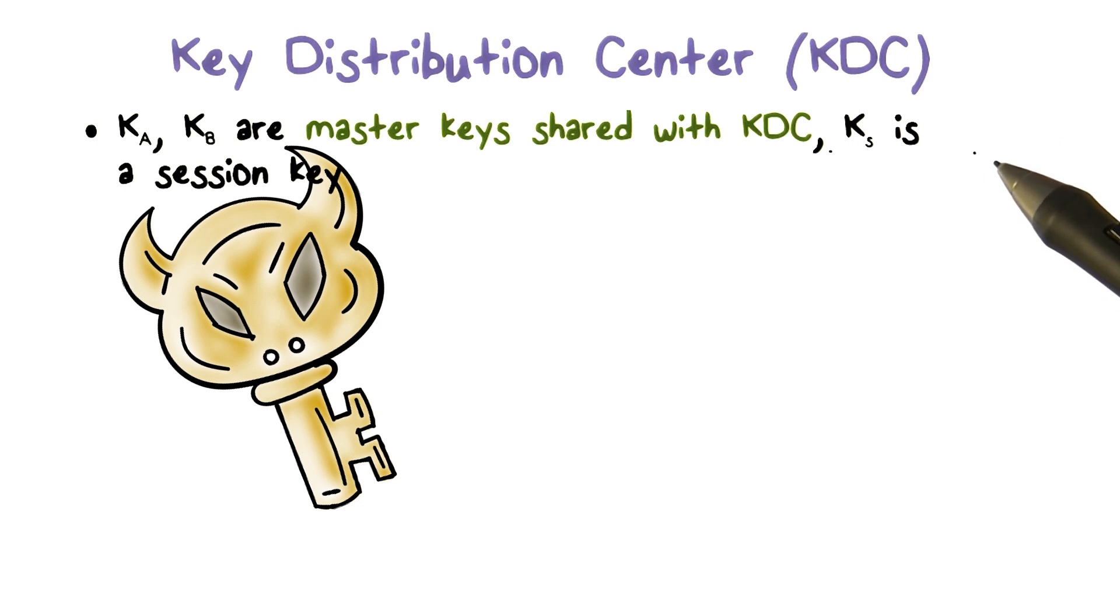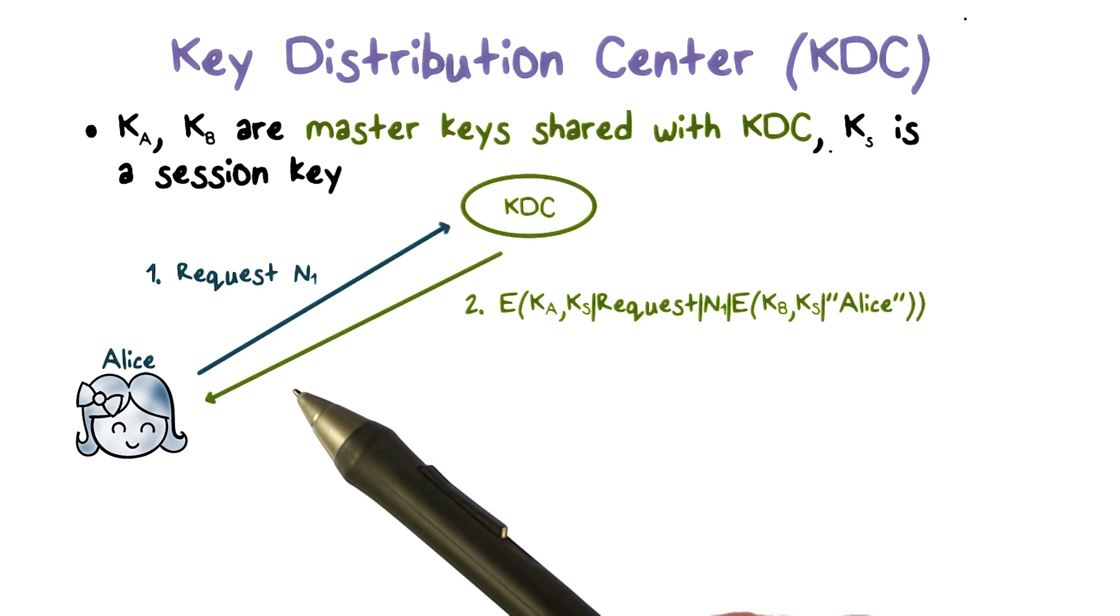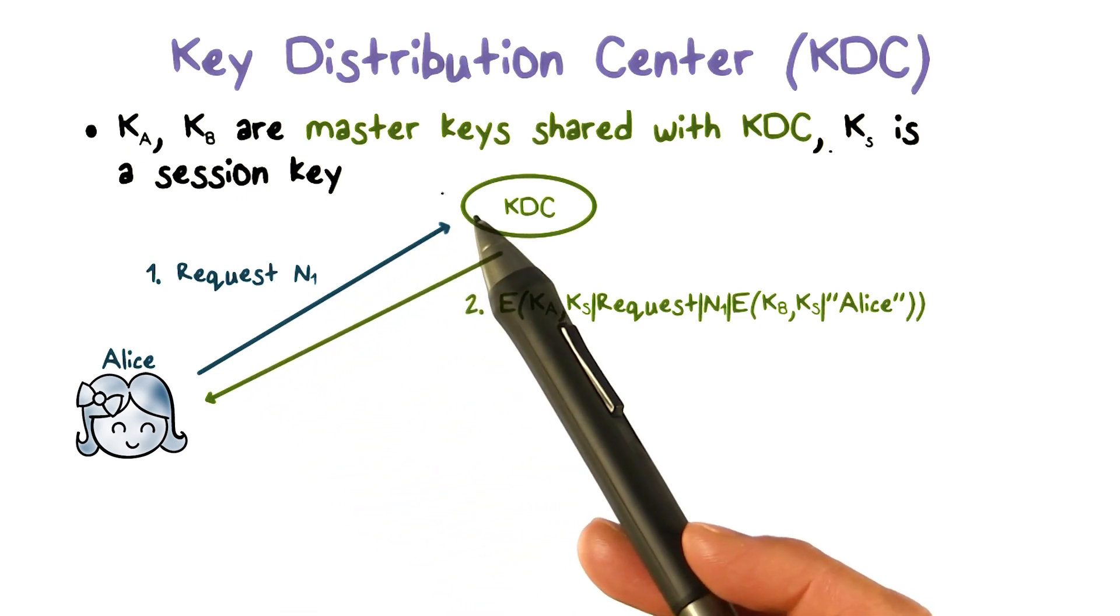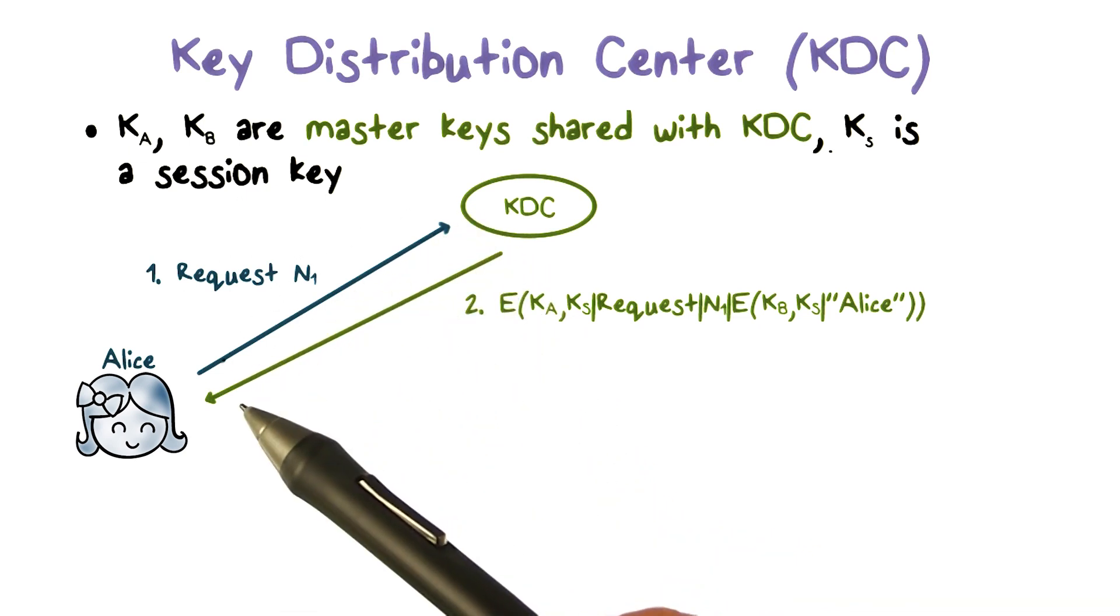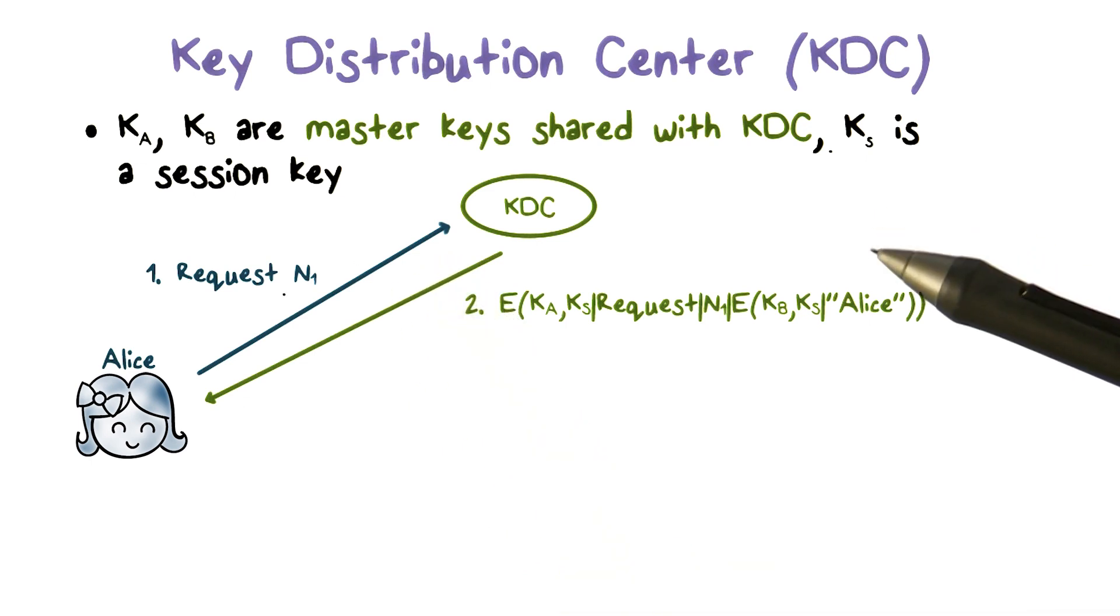Now suppose Alice and Bob want to have a secure session. Therefore, they need a session key KS. First, Alice sends a request to KDC saying that I need a key to talk to Bob, along with a nonce N1.